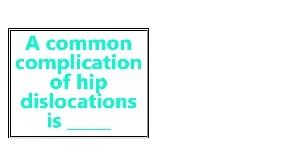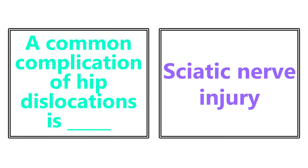A common complication of hip dislocations is sciatic nerve injury. The sciatic nerve runs in close proximity to the hip joint, so if there is a dislocation, it can cause compression and damage of the sciatic nerve, which can cause paresthesias of the affected limb.